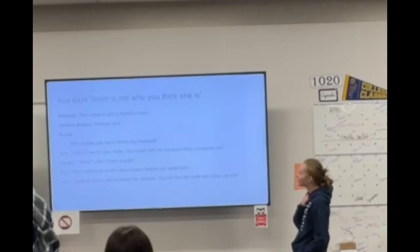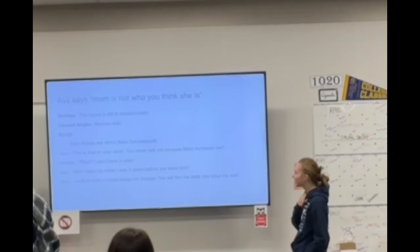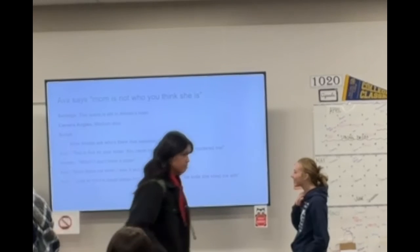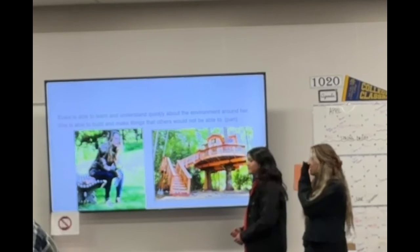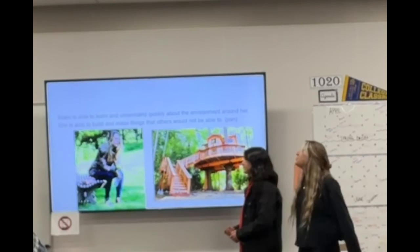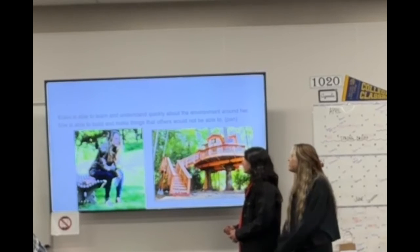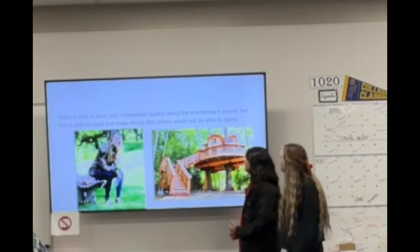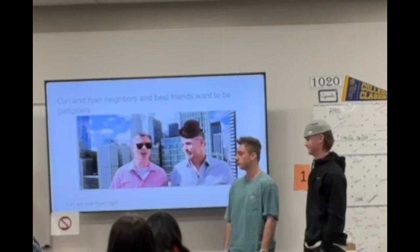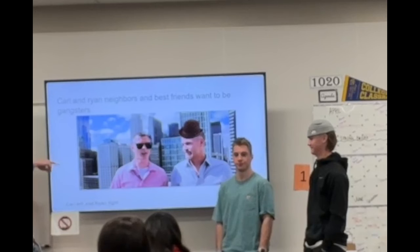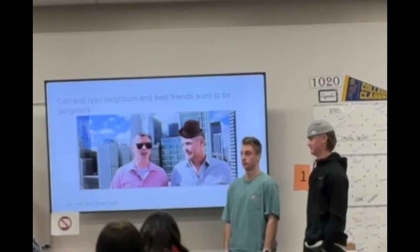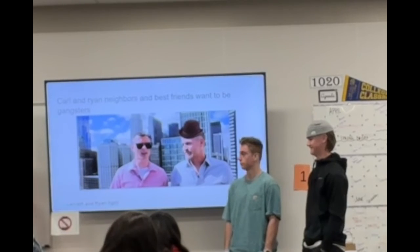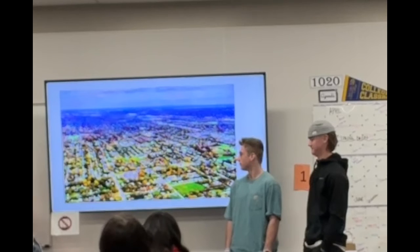One group's pitch involved a character named Ava whose sister would say 'this is your sister, your mom's not with me,' and she killed her — and Amelia would respond 'what, I don't have a sister.' Another group described a creative-style film following two guys, Carl and Ryan, best friends who are also gangsters but suburban dads, starting with an establishing shot of Denver. Another described a character named Manny who moved to his new house in California.